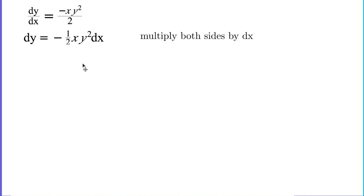I'm going to group my y's with my dy, my x's with my dx. So I'm going to divide both sides by y squared. And when I do that, I have essentially what I wanted.